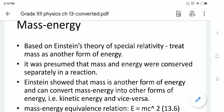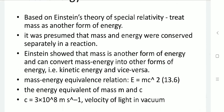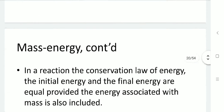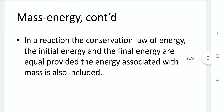Based on that, Einstein gave the energy equation E = mc². Here, E is the energy equivalent of mass, and c is the velocity of light in vacuum, which is 3 × 10⁸ m/s. Based on the conservation law of energy, the initial and final energies are equal, and the energy associated with mass can also be included.